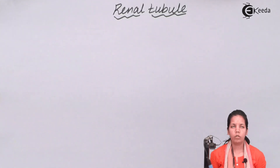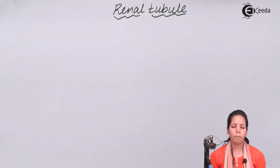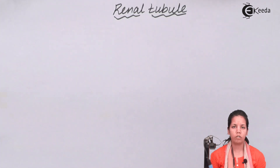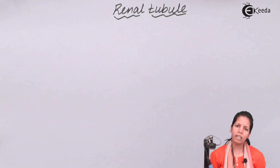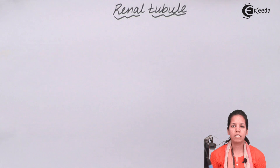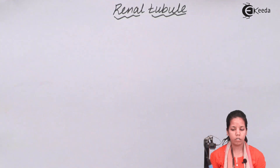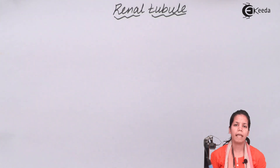Renal tubule can simply be described as a coiled long tubular part of a nephron, and it basically consists of PCT, DCT, and Henle's loop — that is proximal convoluted tubule and distal convoluted tubule. Your renal tubule arises from the base of the Bowman's capsule. Now your PCT, or proximal convoluted tubule, reabsorbs all the essential nutrients and 70 to 80 percent of electrolytes and water.